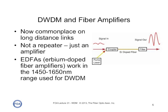In long distance networks, fiber amplifiers are used to regenerate the signal. It's not a repeater — it's just an amplifier. It doesn't convert the signal to an electrical signal and then back to an optical signal. It actually works more like a fiber amplifier where the incoming signal goes into some erbium-doped fiber, pumped by a pump laser, and we get stimulated emission along the fiber amplifier fiber itself. These erbium-doped fiber amplifiers work in the 1450 to 1650 nanometer range that's used for dense wavelength division multiplexing. Look for another video soon on fiber amplifiers.